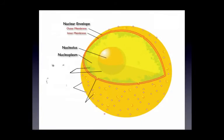Additional sub-organelles include chromatin, which is suspended in the nucleoplasm; ribosomes, which pepper the outer membrane; and nuclear pores, which are holes that allow substances such as mRNA passage through the envelope.